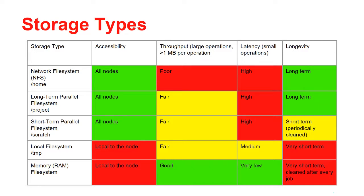Then the short-term parallel file system, which actually has somewhat better but comparable performance to the project file system. It is available on all nodes of the cluster. The throughput is fair and the latency of operations is high. This file space is cleaned periodically, so you have to have a plan to remove your files from it once you're finished with them.